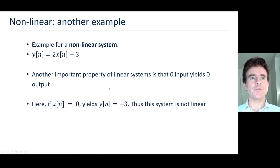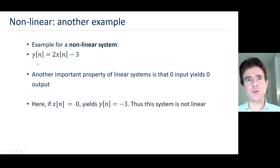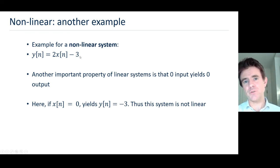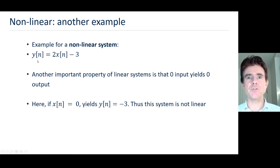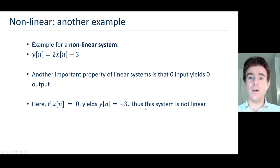A final example of a non-linear system: this is of the form y equals mx plus c — a classic linear equation in common usage, but it doesn't hold as a linear mapping in our context because that minus three offset makes it effectively non-linear. An important property of linear systems is that if you put a zero input in, you should get a zero output. With y equals mx plus c, if we put in x equals zero, we get minus three at the output. So that system is not linear — you can't expect x1 plus x2 input to give a y1 plus y2 output, as we've seen in earlier slides.